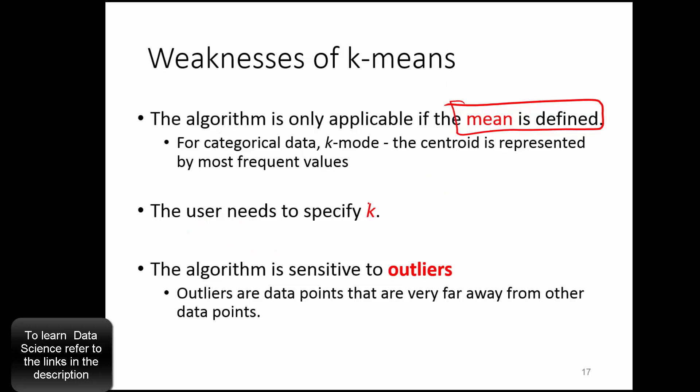The user needs to specify K, so you have to be an expert in the data that you are working on. That means you should know how many clusters are there in the data. You cannot afford to have this from your algorithm. The clustering algorithm will not tell you how many clusters are there in the data, you just have to provide K - 2 or 3 or 5 or 6, whatever.